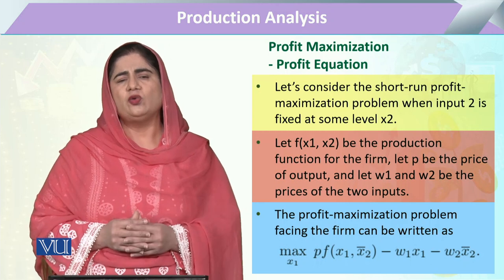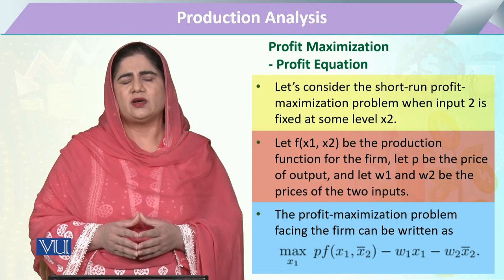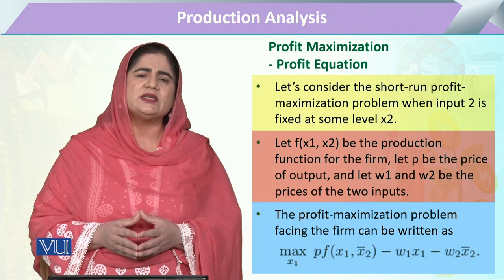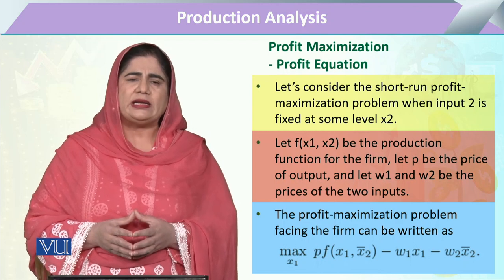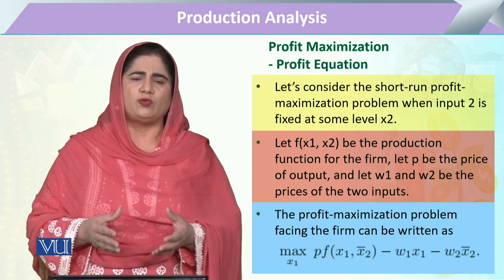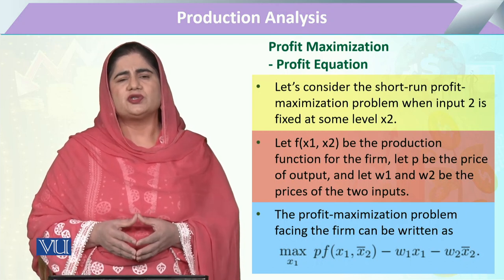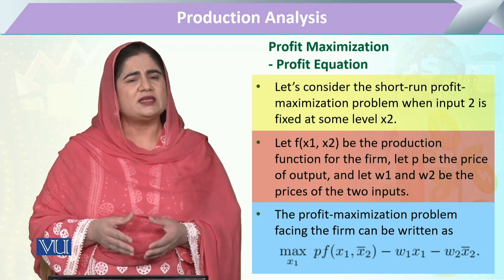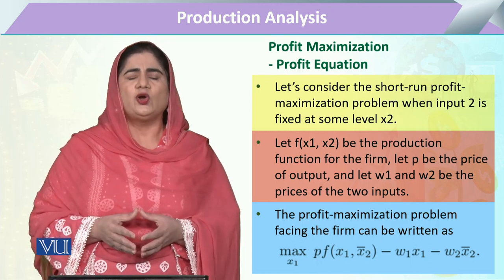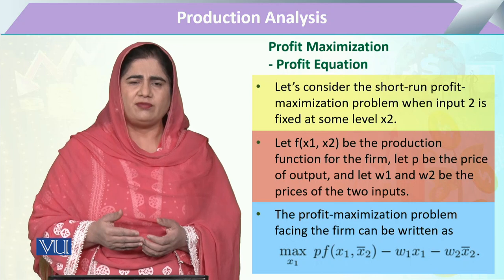In the production procedure, there is an isoquant that shows the various combinations of capital and labor, and those combinations produce the same level of output. Likewise, the production possibility frontier explains the various combinations of capital and labor, meaning all available resources, to have the maximum level of output. We have already studied various types of graphs related to this.